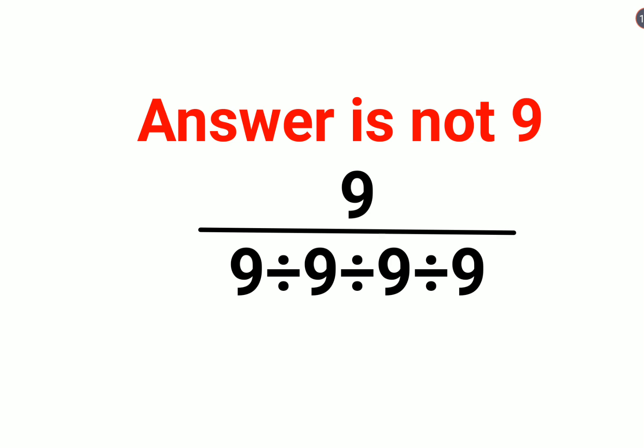So first very quickly let's write down this is basically 9 divided by, then there is something in the new denominator which is 9 divided by 9 divided by 9 divided by 9.